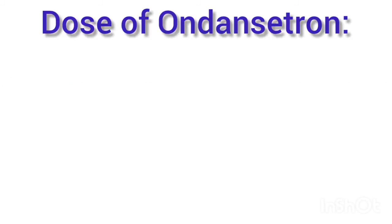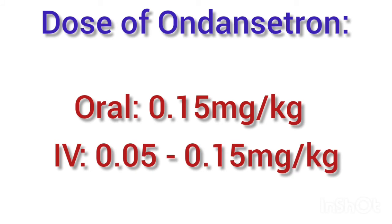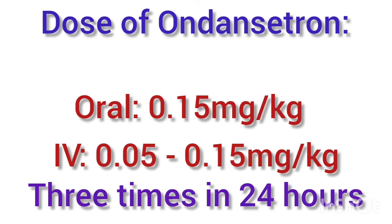The usual dose for oral Ondansetron is 0.15 mg per kg body weight, and for intravenous 0.05 to 0.15 mg per kg body weight per dose, given at least three times over 24 hours.